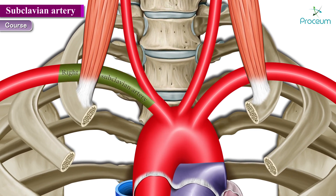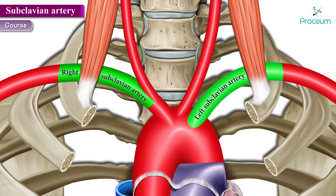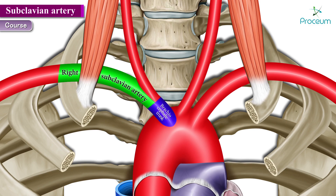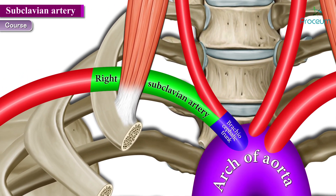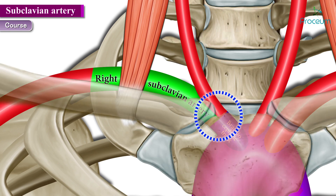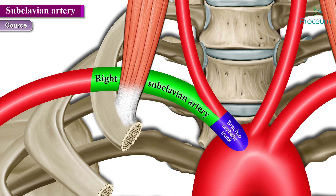Regarding the course, let us discuss the right subclavian artery first. The right subclavian artery originates from the brachiocephalic trunk. The arch of the aorta gives off the brachiocephalic trunk behind the upper border of the right sternoclavicular joint. The brachiocephalic trunk in turn gives off two important arteries: the right subclavian artery and the right common carotid artery, which shoots up into the neck.